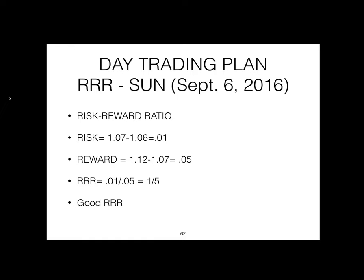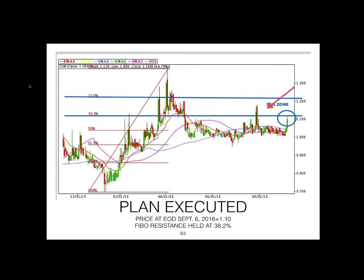As a rule of thumb, a good risk-reward ratio is one where the reward outweighs the risk 4:1 — do not trade stocks where your risk-reward ratio is less than 1:4. Having followed the plan, the average gain would be between 2.8% and 4.6% — 4.6% if sold at the high, or 2.8% if you sold everything at the end-of-day price of 1.10 for SUN on that day.